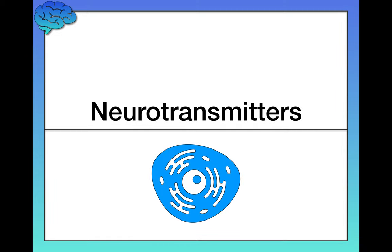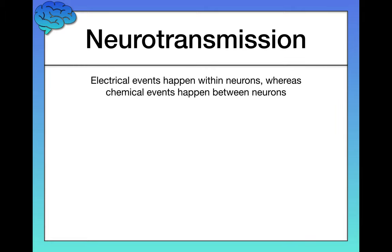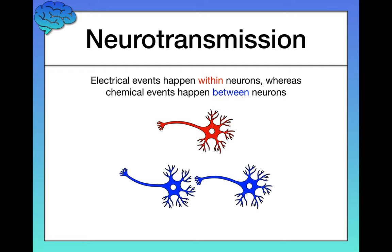In this video, we're going to talk about neurotransmitters, another very important communicator in the brain. As we hinted at in our previous video on neurotransmission, electrical events happen within neurons — that's all the stuff about action potentials and signals traveling down the axon. But chemical events happen between neurons, and it's those chemical events that we're going to focus on in this video.